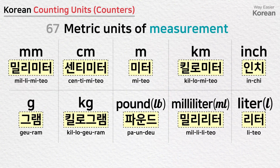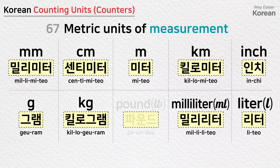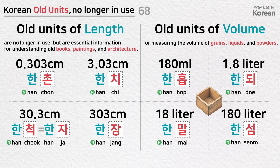Metric units of measurement include: 밀리미터 (millimeter), 센티미터 (centimeter), 미터 (meter), 킬로미터 (kilometer), 인치 (inch), 그램 (gram), 킬로그램 (kilogram), 파운드 (pound), 밀리리터 (milliliter), 리터 (liter). Old units of length are no longer in use but are essential for understanding old books, paintings, and architecture.